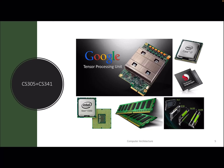This course is a combination of theory and lab: CS305 is the theory and CS341 is the lab. This slide shows various images — one from an Intel server, an Intel Core i7 that's in your laptop, a Qualcomm processor, a GPU from NVIDIA, a TPU from Google, and finally a memory or DIMM module, which is not a processor.